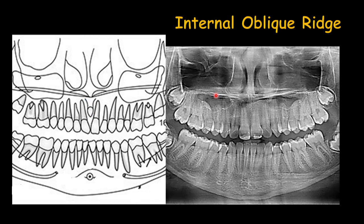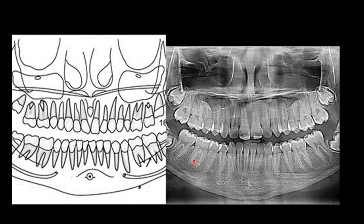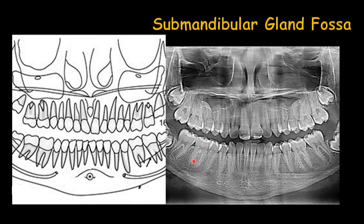The internal oblique ridge, sometimes called the mylohyoid ridge, is a single opaque line underneath the mandibular molars located on the lingual side of the mandible, where the mylohyoid muscles attach. Beneath the mylohyoid ridge we have the submandibular gland fossa, which appears as a radiolucent shadow because of the depression of the bone in that area for the gland — it is thinner bone, so it appears radiolucent in the panoramic radiograph.